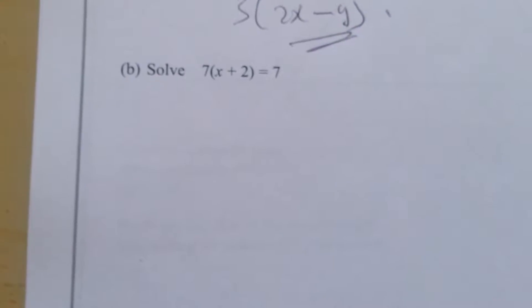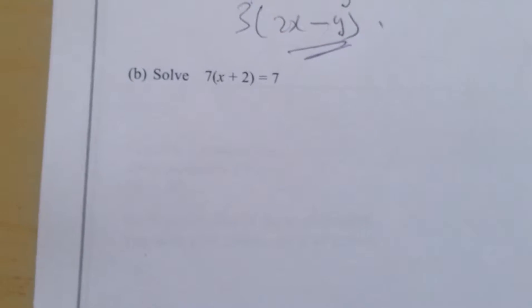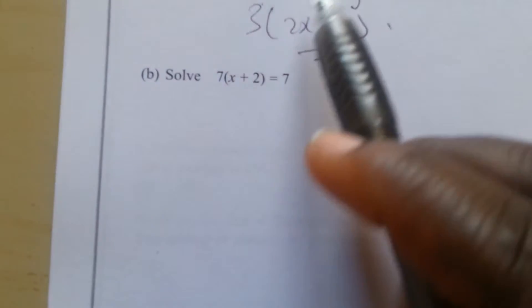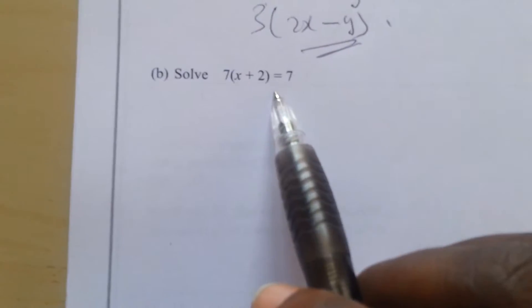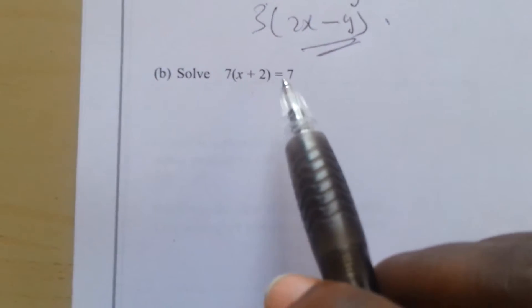This question says solve 7 into x plus 2 is equal to 7. What we're going to do first is expand this bracket, then we gather like terms together.